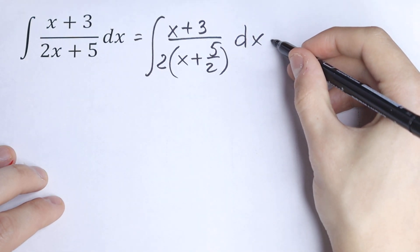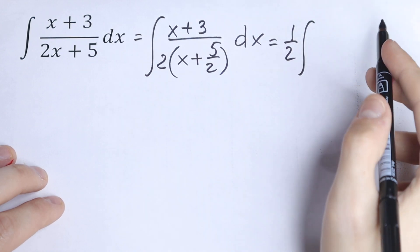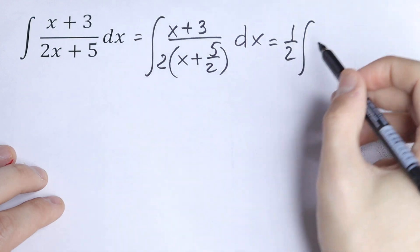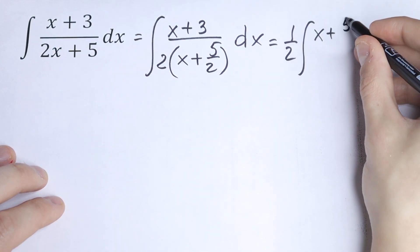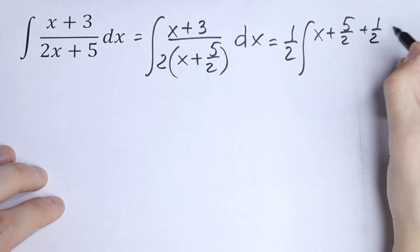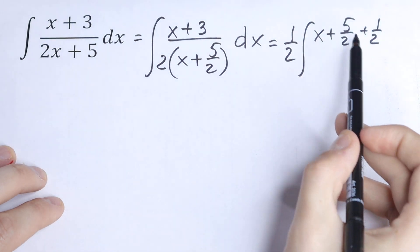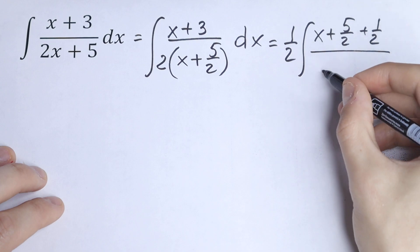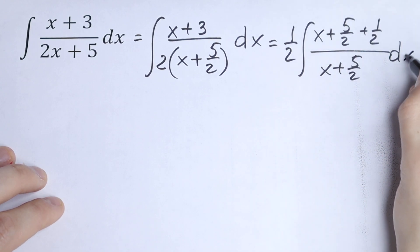Right now we can factor out one half before our integral, because this is our constant. So we will have one half times the integral, and let's write 3 as 5/2 plus 1/2. So we will have (x + 5/2 + 1/2) over (x + 5/2) dx.